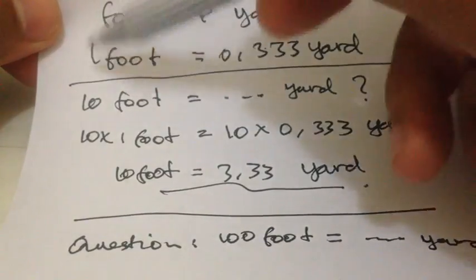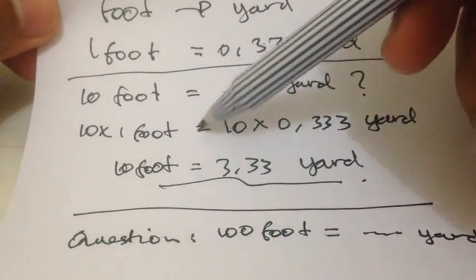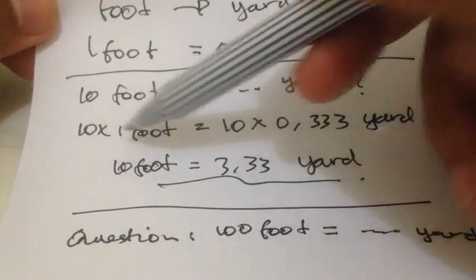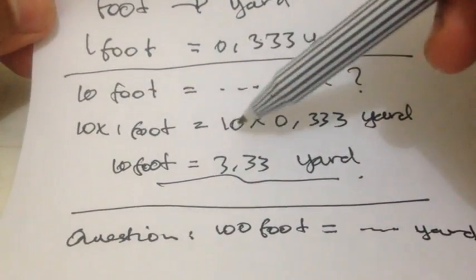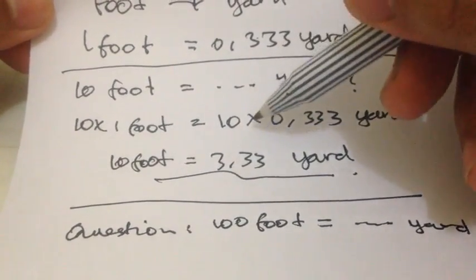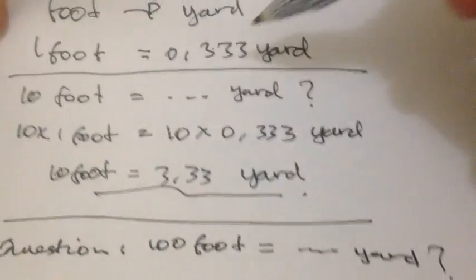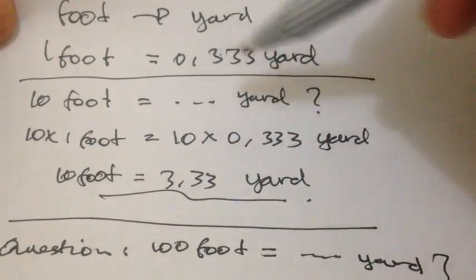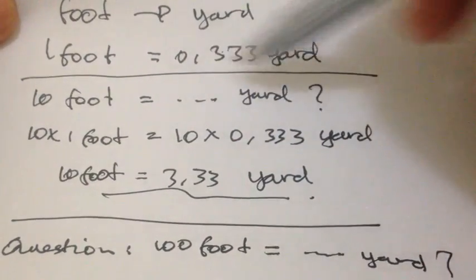It's equal to, because we have 10 left, we should have 10 to right. So I put this 10, and then we multiply this 10 with the basic formula, multiply it with 0.333.